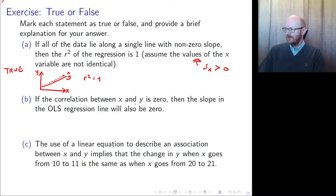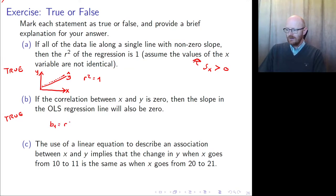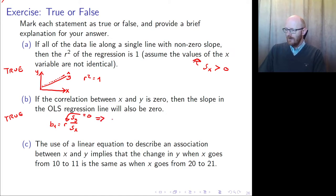Statement: if the correlation between X and Y is zero, then the slope in the OLS regression line will also be zero. This is true, because the slope formula is the correlation times the ratio of the sample standard deviation of Y to the sample standard deviation of X — so if the correlation equals zero, then b1 the slope equals zero. And if that's the case, R-squared is zero as well and you're left with the normal model — a flat line.